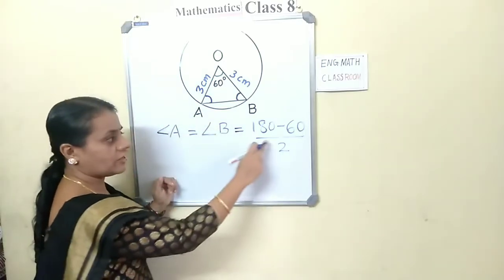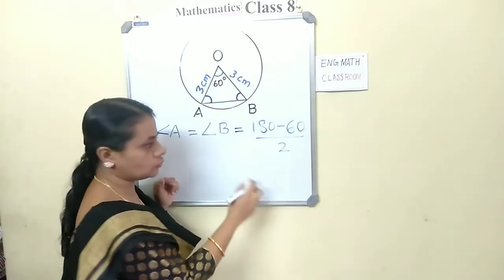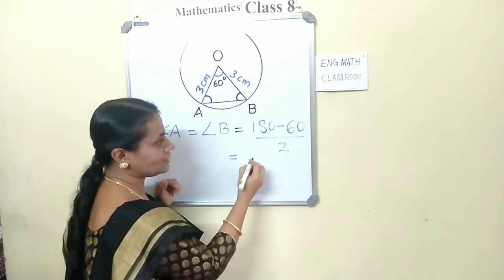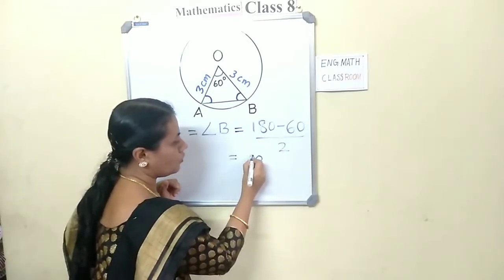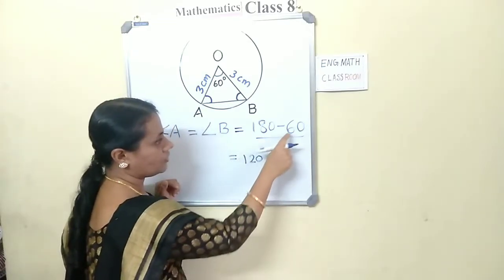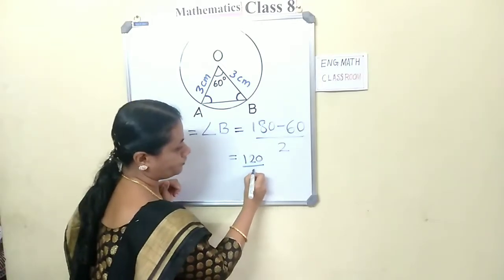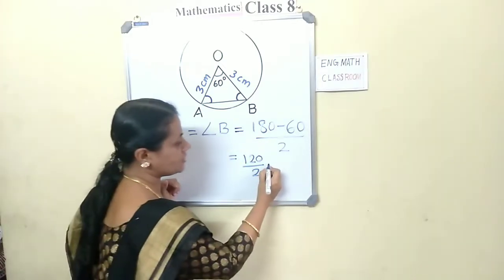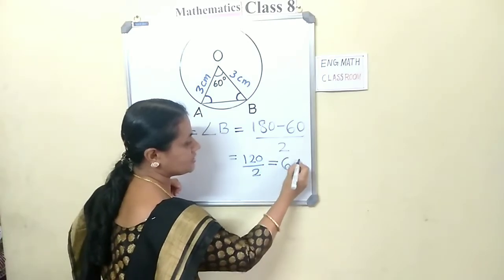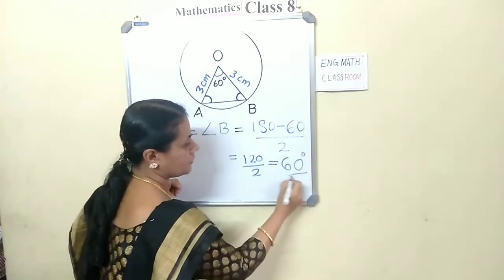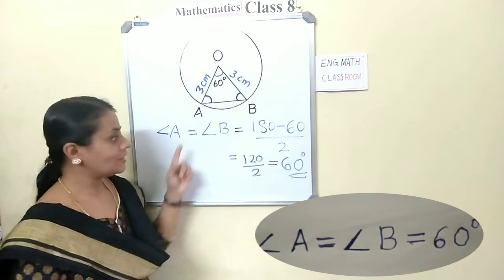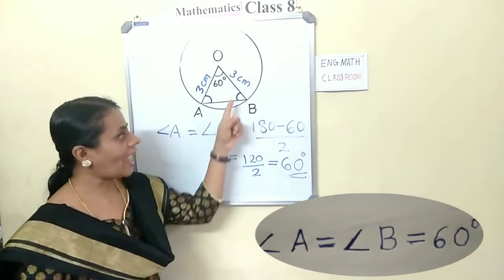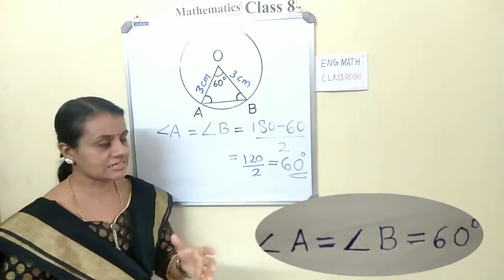To find each angle, we do division by 2. So 180 minus 60 is 120, correct? 120 divided by 2 is 60 degrees. So angle A is 60 degrees and angle B is also 60 degrees.